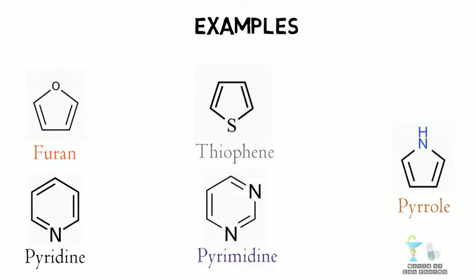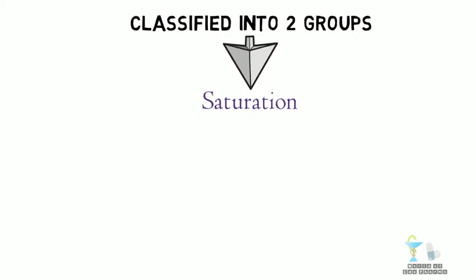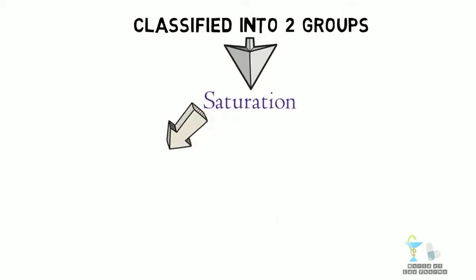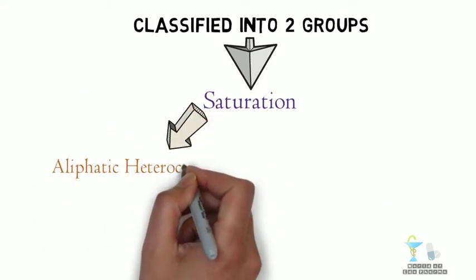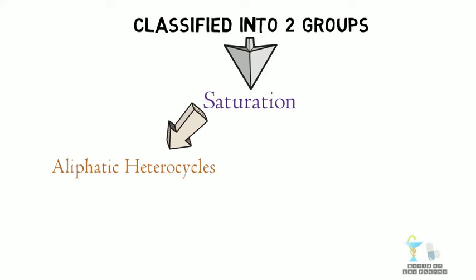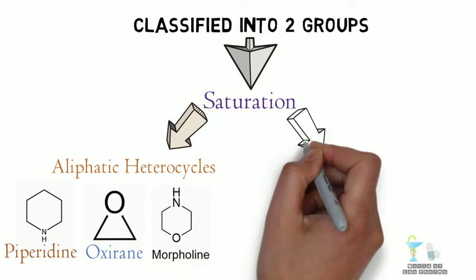They are classified into two groups based on saturation. Number 1: Aliphatic heterocycles, which are fully saturated in nature. Examples are piperidine, oxyrane, and morpholine.